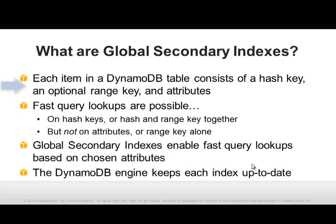DynamoDB table items contain a hash key and an optional range key, followed by zero or more values called attributes. The keys allow an application to retrieve one or more table items. Suppose you'd like to retrieve all the items that match certain criteria. The DynamoDB engine supports fast, efficient retrieval based on matching hash and range keys. However, non-key attribute values require a costly and slow scan of the table.